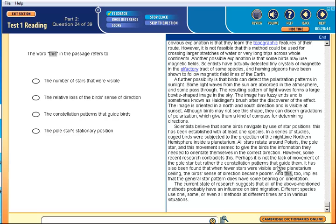The word 'this' refers to what? This too implies that the general star pattern does have some of this information. It's not the lack of movement, but rather the constellation patterns. It's also been found that when the fewer stars were visible, the birds' sense of direction became poorer. However, this fact implies the general pattern does have some bearing on orientation. Yes, so the fact that they lose their sense of direction. They lost their sense of direction.